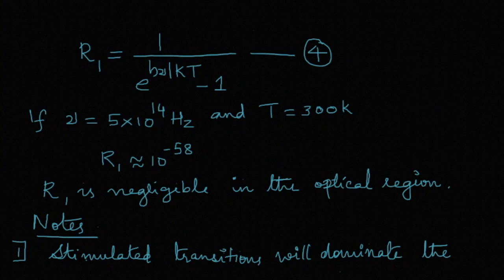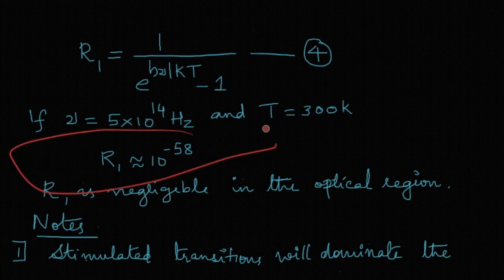So we got the rate equation, and suppose we give some sample values. We are considering the optical frequency approximately 5×10^14 hertz and temperature 300 Kelvin, and we get the value of R1 to be 10^-58. So you can see that this rate is very very negligible, 10^-58 in the optical region.